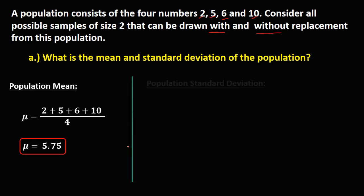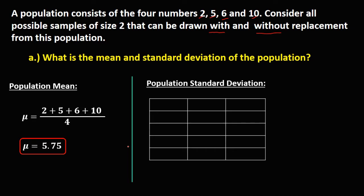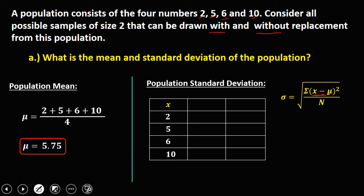To solve for the population standard deviation, I'm going to use a table form. We have x for the numbers in the population: 2, 5, 6, and 10. The formula for standard deviation is the square root of the summation of (x minus the population mean) squared over n. So we need to first solve x minus the population mean for each value.